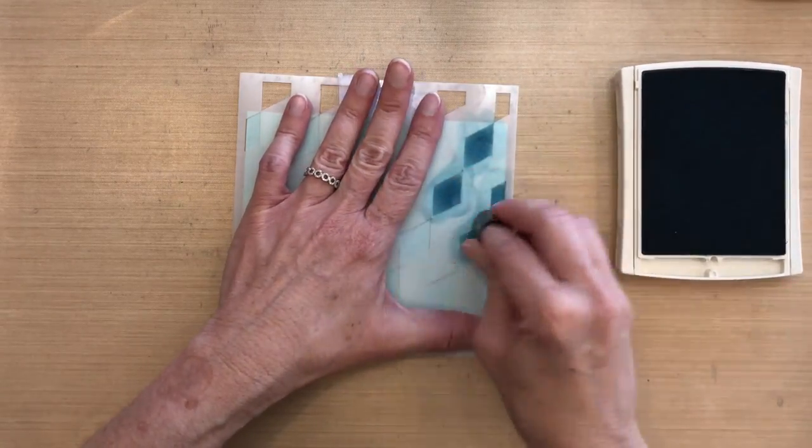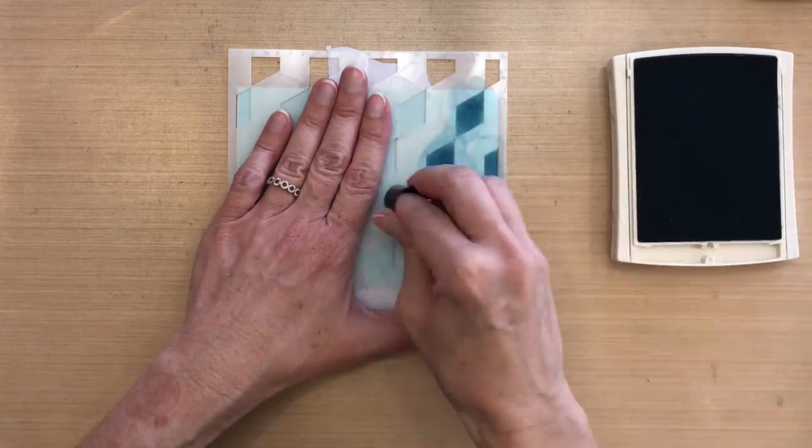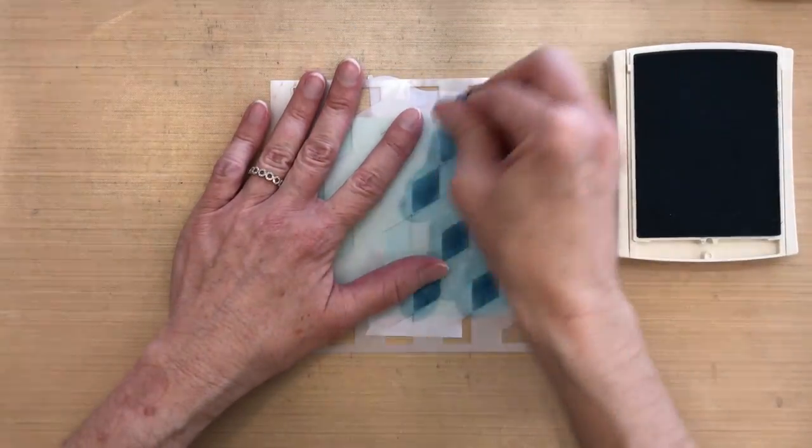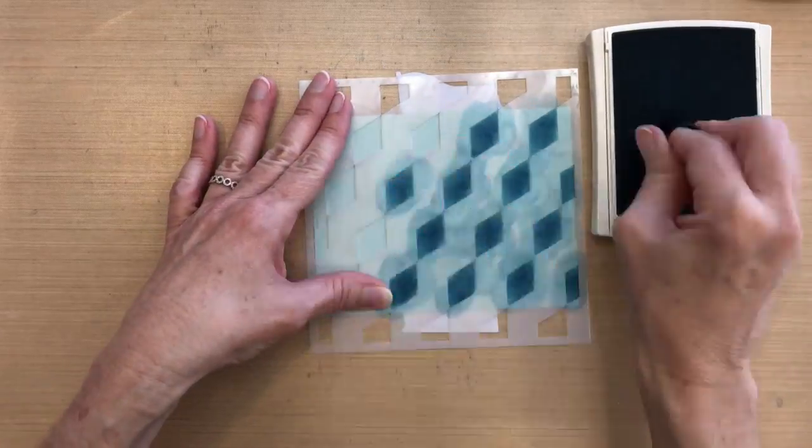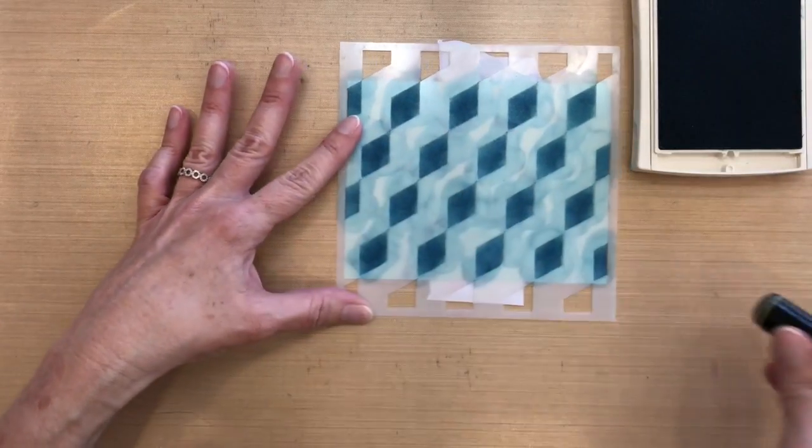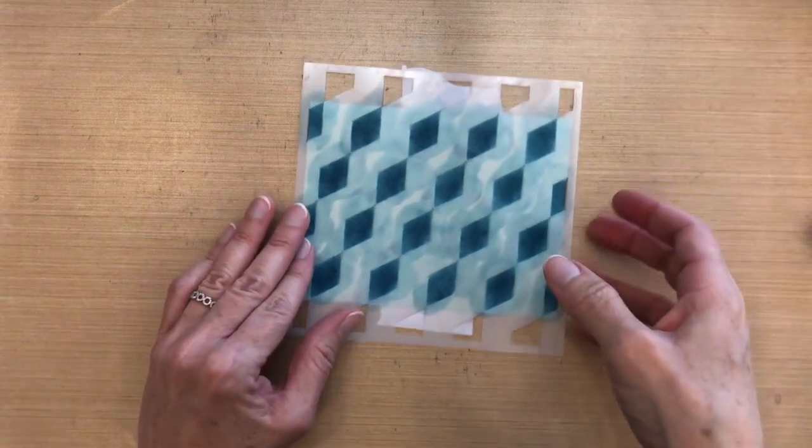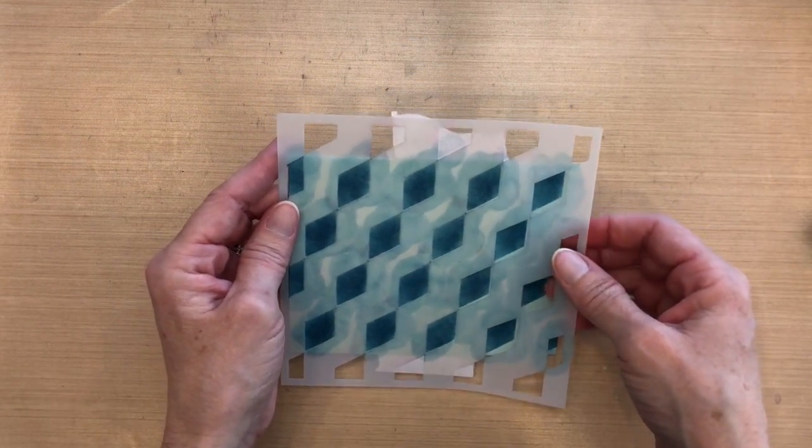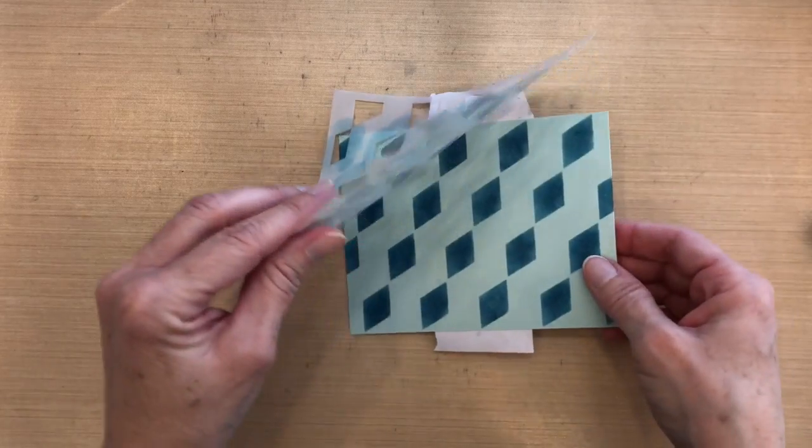I'm going to speed this up quite a bit, but you can see that I'm just making sure that I get good coverage and even coverage over all of these diamonds here. Now, this stencil was really made to only use two colors and then the color of the cardstock would be your third color, but I'm actually using three colors and I'll tell you why in a second. So let me peel this off and you can see what it looks like so far.